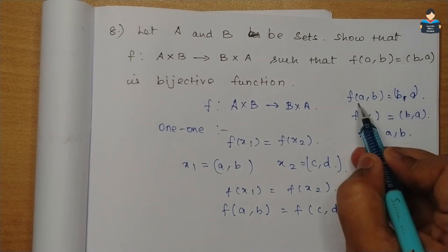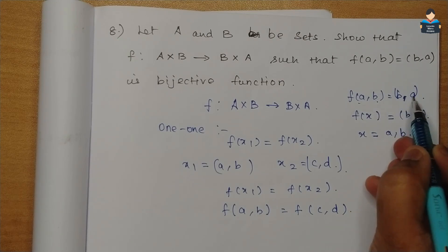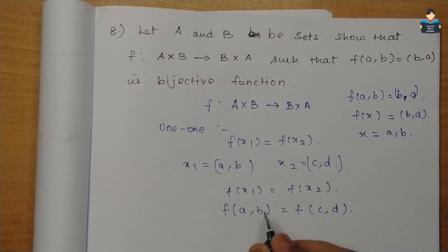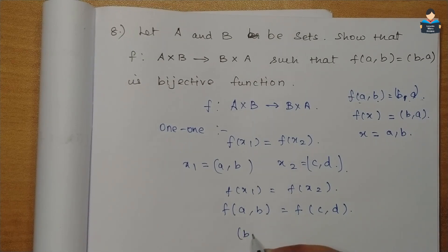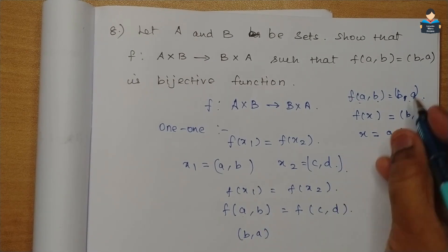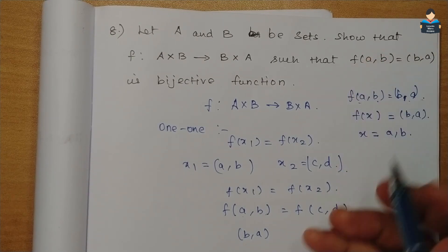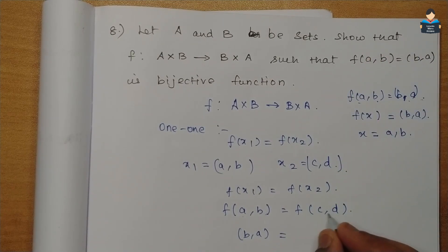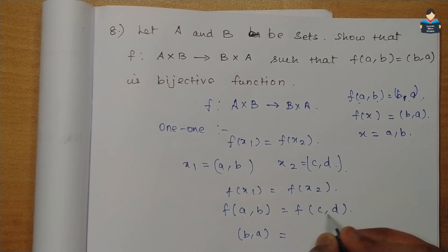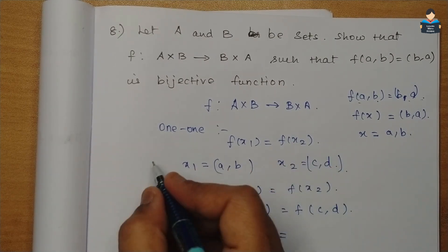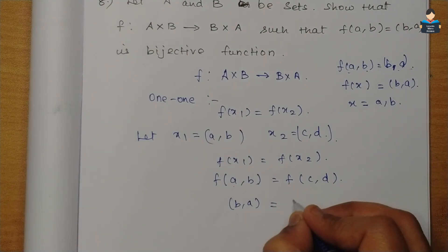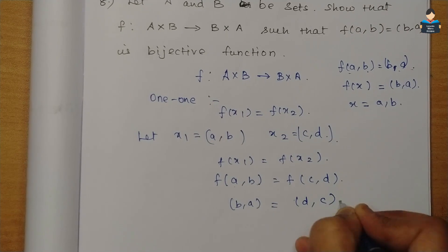So applying the definition, (b, a) = (b, a) which gives us (b, a) = f(c, d). This means the ordered pairs are equal.